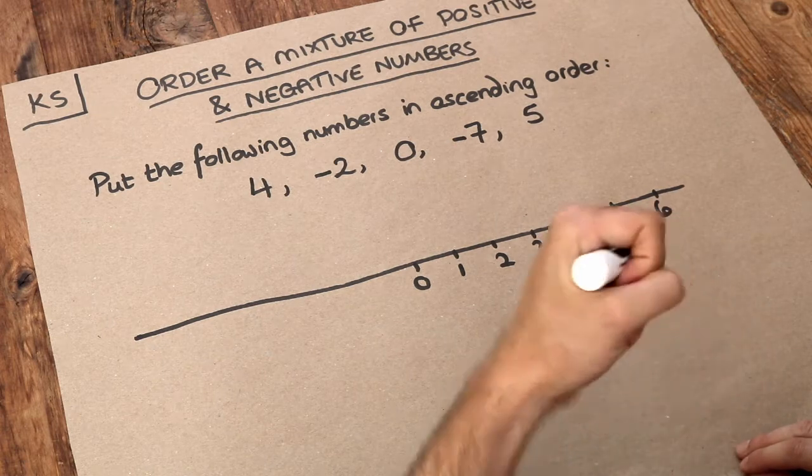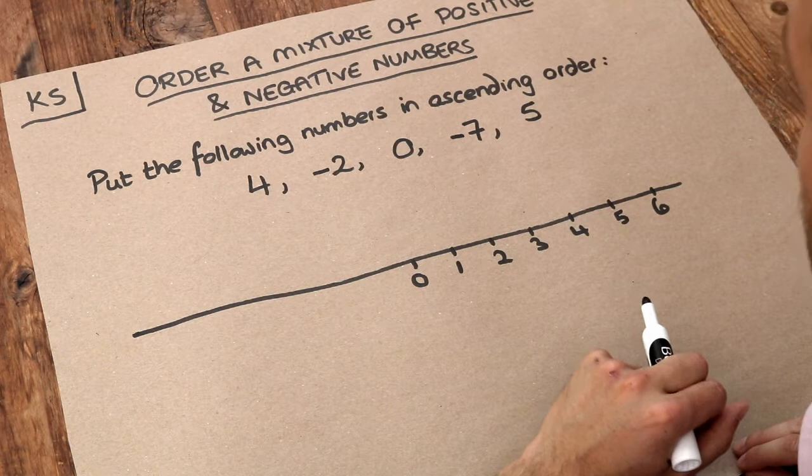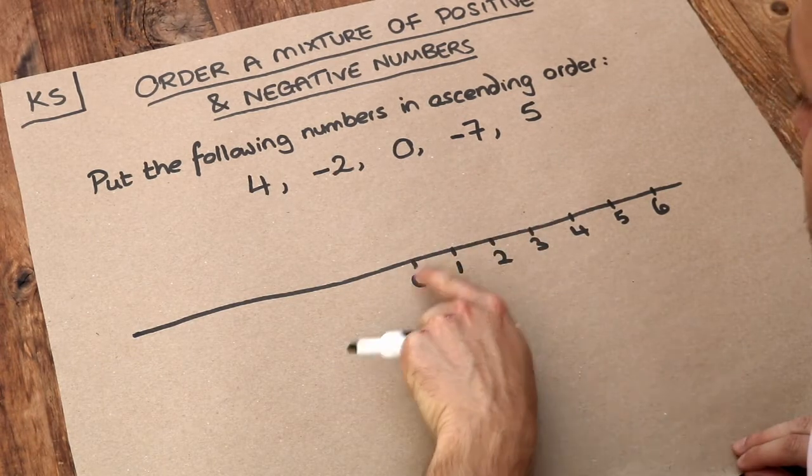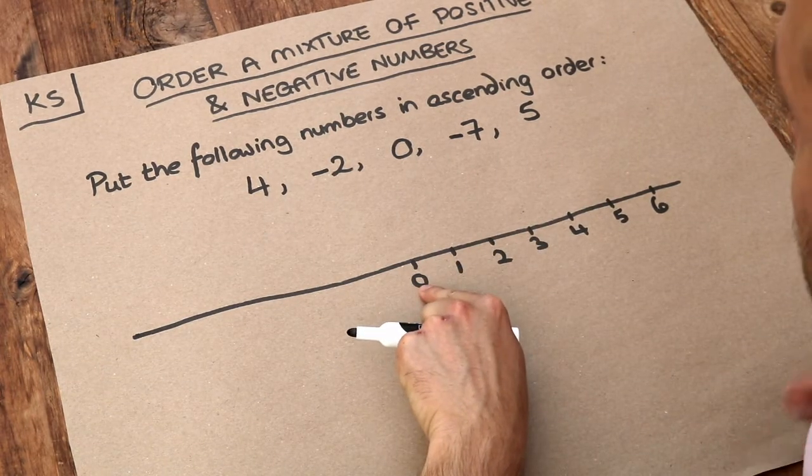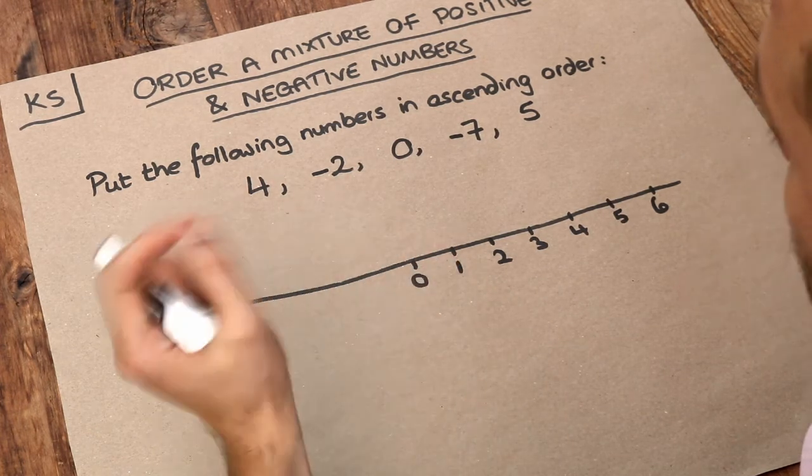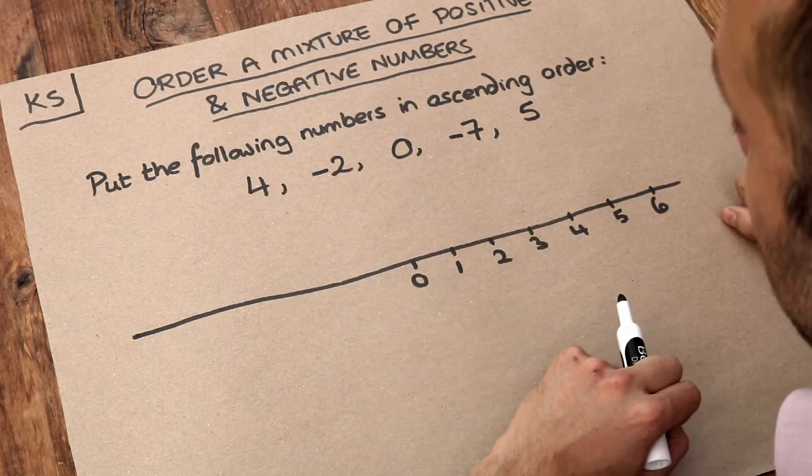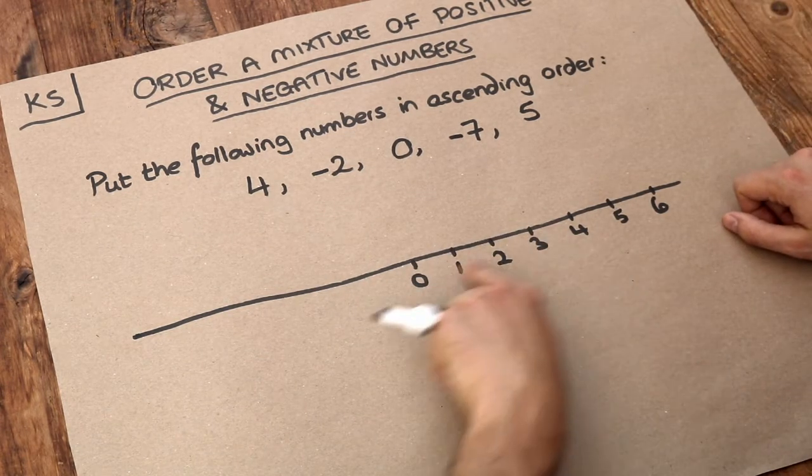Now negative numbers allow us to represent numbers below zero, and that happens in real life in a variety of contexts. For example, temperature. If you have zero Celsius, that's when water starts to freeze. But you could have temperatures colder than that. If you go to the Antarctic, the temperatures are likely to be below zero centigrade. And this is how it works in the number line.